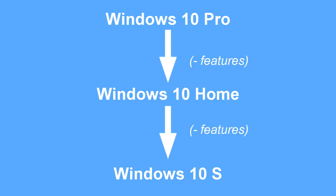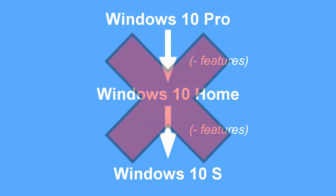But that's not the case. Windows 10 S is a kind of mix and mash of Windows 10 Pro and Windows 10 Home, but some features are excluded for security reasons. Let's have a look at some important features that differentiate the three versions.